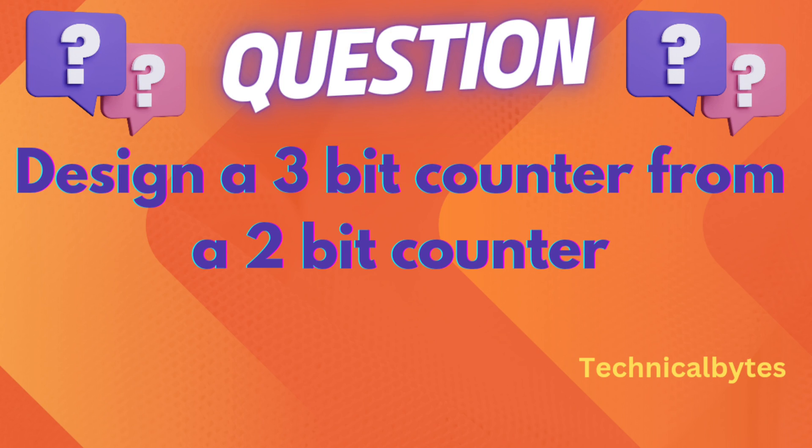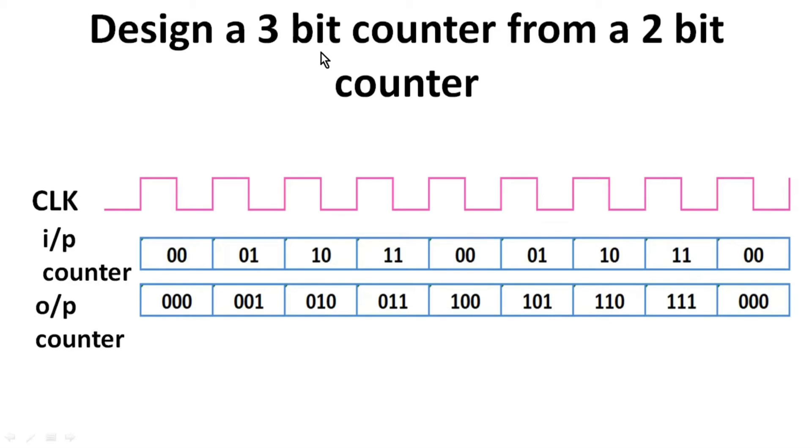You have to design a 3-bit counter from a 2-bit counter. What I mean by that, you are given with two inputs, clock signal and a 2-bit counter which is counting from 00 to 11 and then again rolls back. So with the help of these two inputs, you have to design a 3-bit counter.